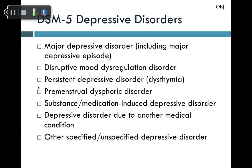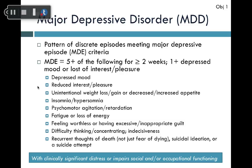The DSM-5 has a long list of different depressive disorders, but we will be focusing on major depressive disorder, which includes major depressive episode. Major depressive disorder, abbreviated MDD, is defined as having discrete episodes that meet major depressive episode criteria — at least one major depressive episode, with possible recurrent episodes amounting to the full disorder.